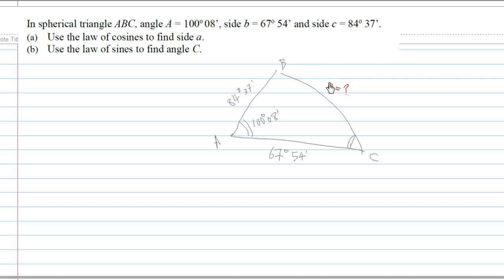Notice that we are going to use the law of cosines to find a, the side BC. Now, in Spherical Triangle, the law of cosines looks like this: cosine a equals cosine b times cosine c plus sine b times sine c times cosine of angle A.